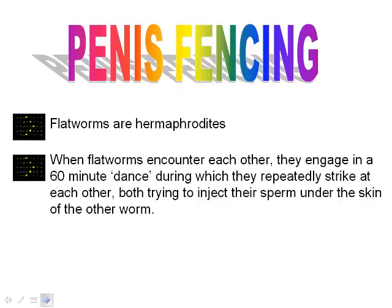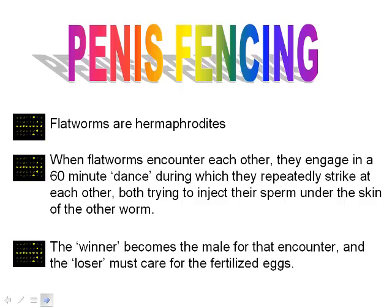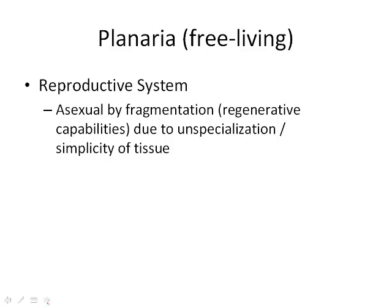They are hermaphroditic, and when they encounter each other they have a 60-minute dance in which they repeatedly strike at each other — both trying to inject sperm under the skin of the other. There's a winner and a loser: the winner becomes the male, the loser becomes the female and must carry the fertilized eggs. They can also reproduce asexually through fragmentation — pieces break off and regenerate into a new organism because they have unspecialized, simple tissue.